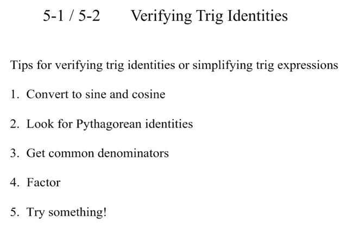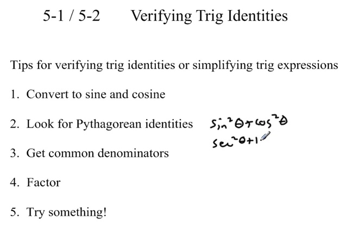Tip one: convert everything to sine and cosine. Tip two: look for Pythagorean identities — things like sine squared of theta plus cosine squared of theta equals one, or secant squared of theta plus or minus one. Anytime you have one of these functions squared plus or minus another, think about those Pythagorean identities.